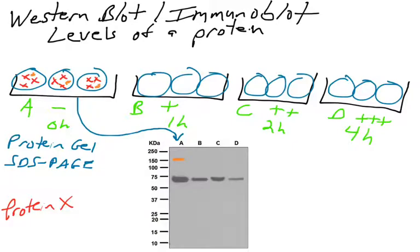This orange protein has a molecular weight of 150 kilodaltons, so it would migrate toward the top of the gel. On the left there is a ladder or marker indicating where proteins of 150 kilodaltons migrate. There's also a yellow protein with a molecular weight of about 27 kilodaltons; when applied to the gel, it would migrate between the 25 and 37 kilodalton markers.